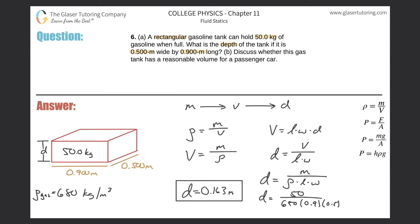Part B says discuss whether this gas tank has a reasonable volume for a passenger car. What we can do now is basically take the volume of this thing, which we can now calculate.